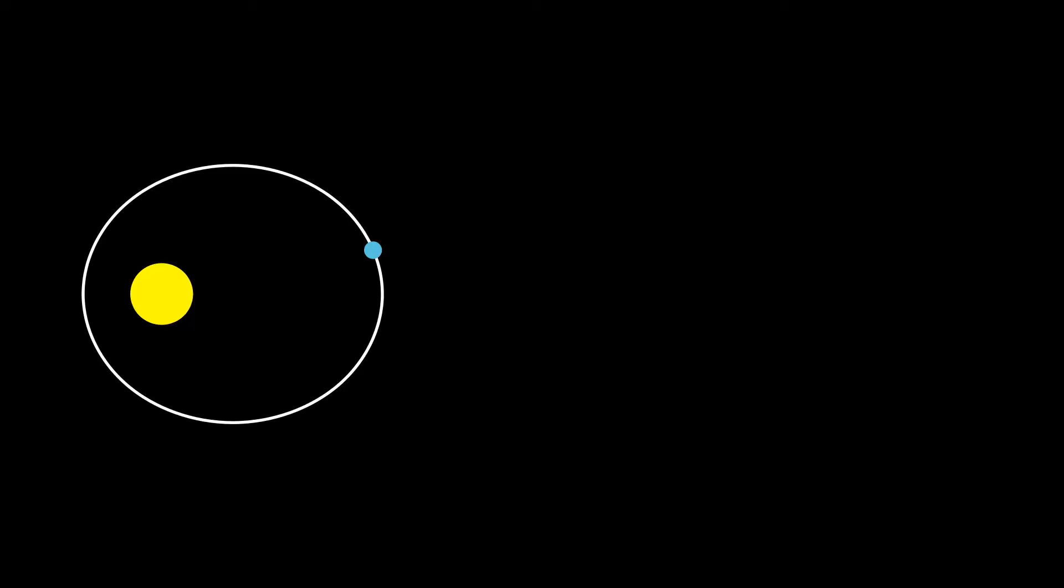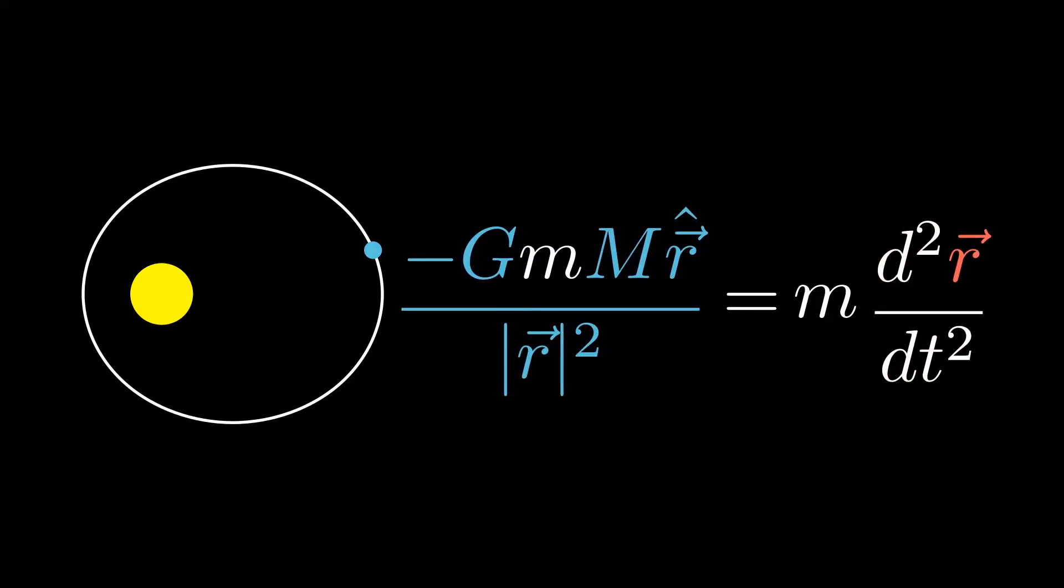Firstly, we start off with Newton's second law of fixed masses, F equals ma. By the inverse-square law, F is equal to minus G times the mass of the Earth times the mass of the Sun divided by the distance squared.